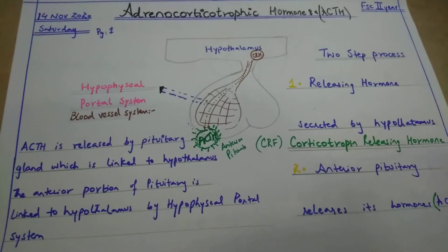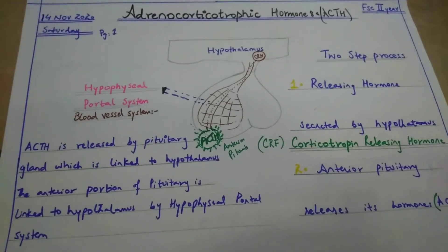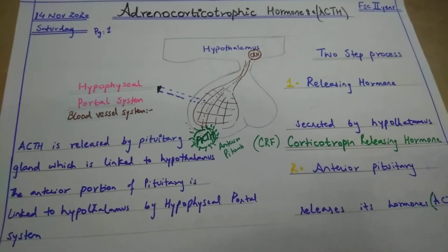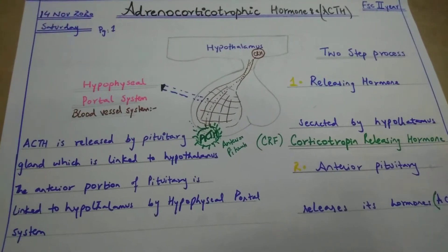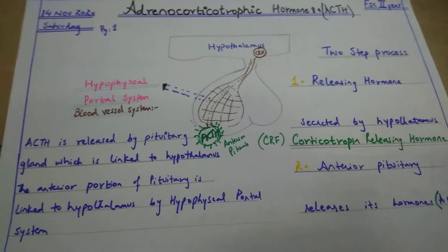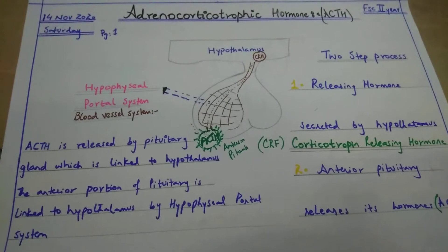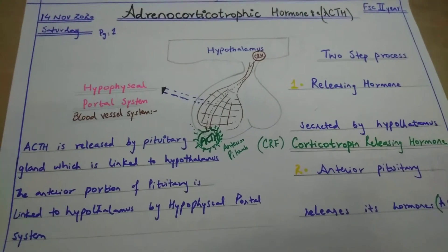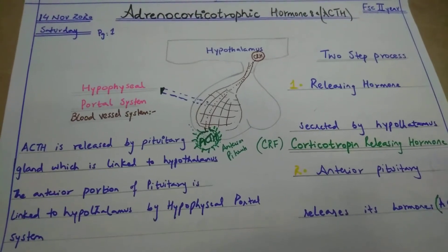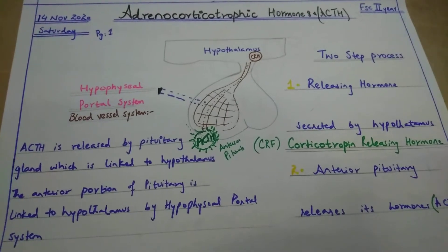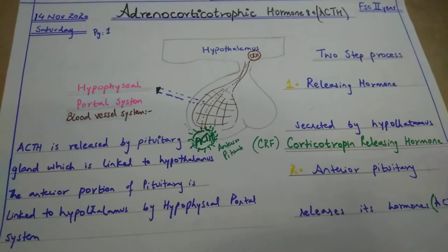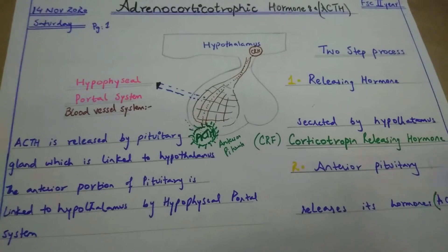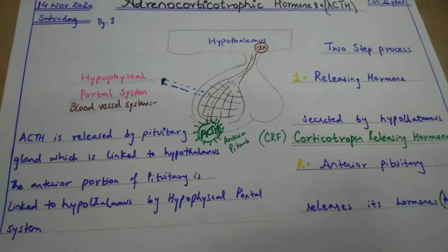Adrenocorticotrophic hormone is a type of hormone which is released from the anterior pituitary, but it is under the supervision and order of the hypothalamus.